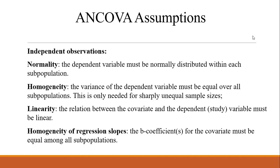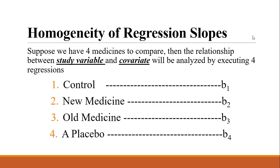The fifth assumption is homogeneity of regression slopes: the regression b-coefficients for the covariate must be equal among all subgroups. For example, with four medicines to compare, four regression lines are executed — one each for the control group, new medicine, old medicine, and placebo — yielding slopes b1, b2, b3, and b4. This assumption states that these four regression coefficients must be approximately equal, that is, homogeneous.